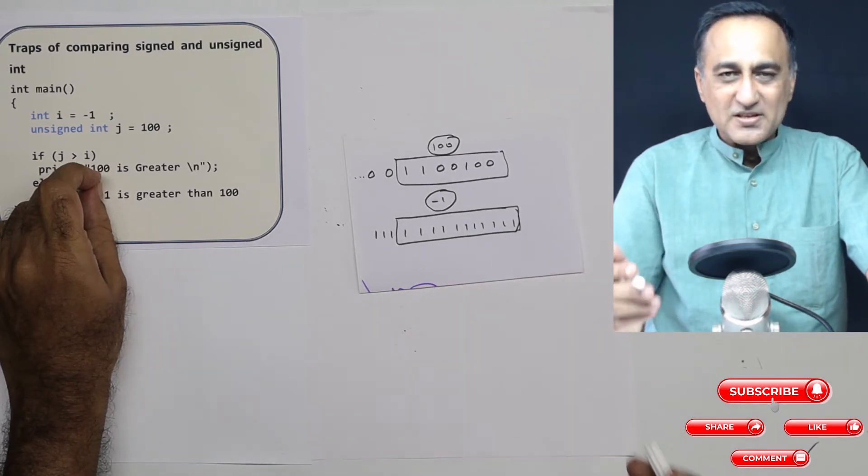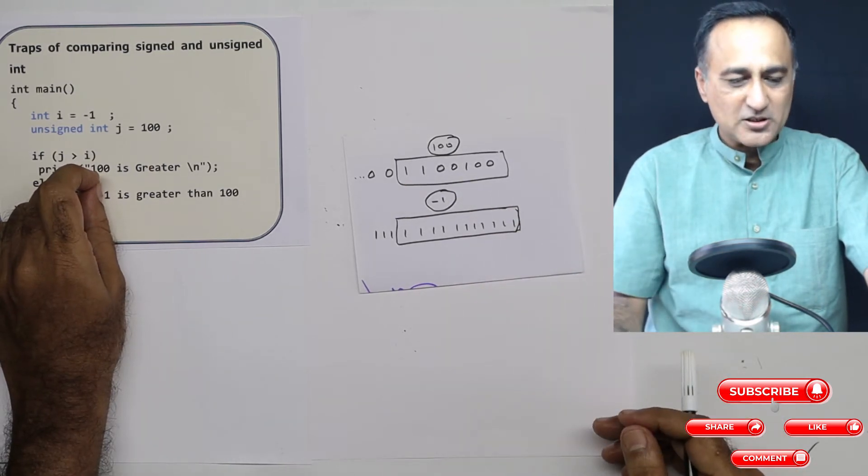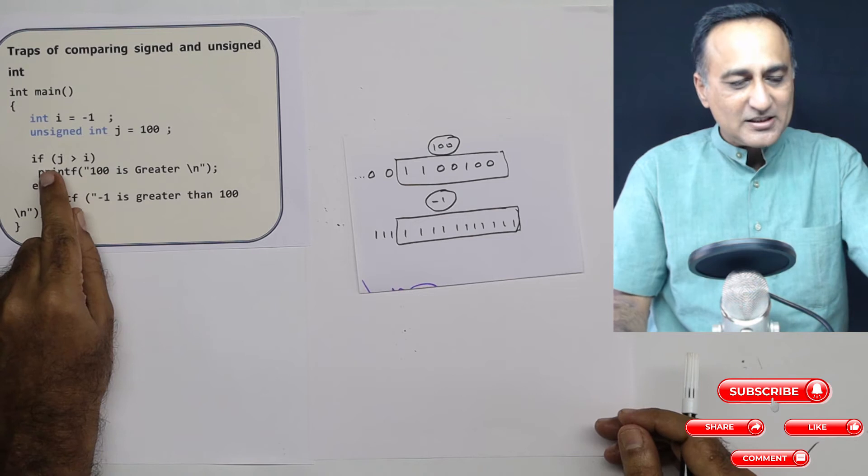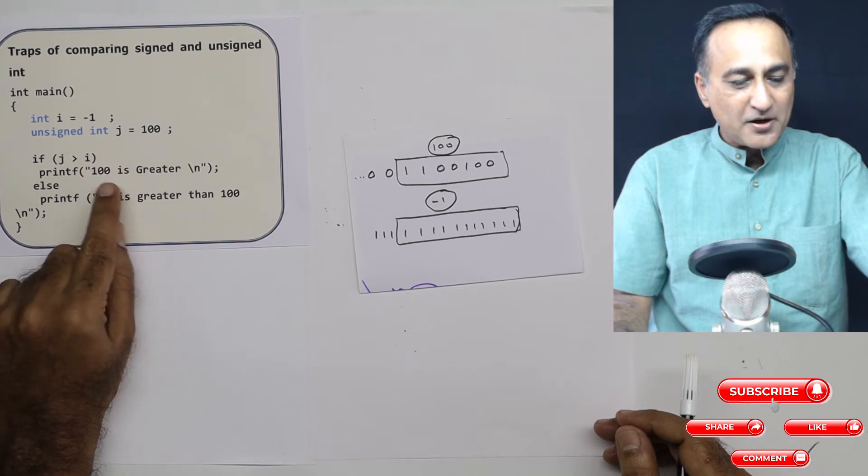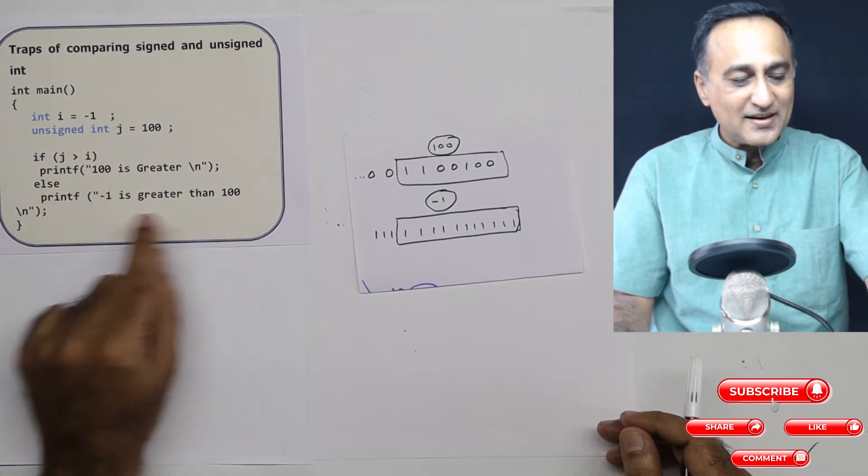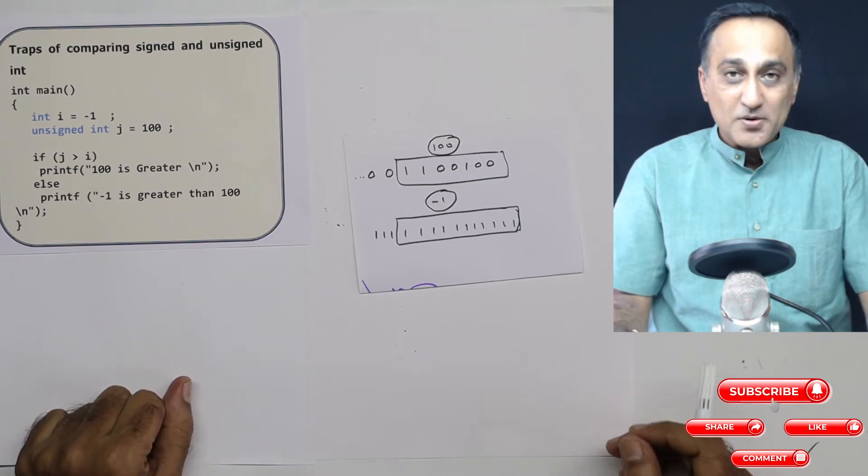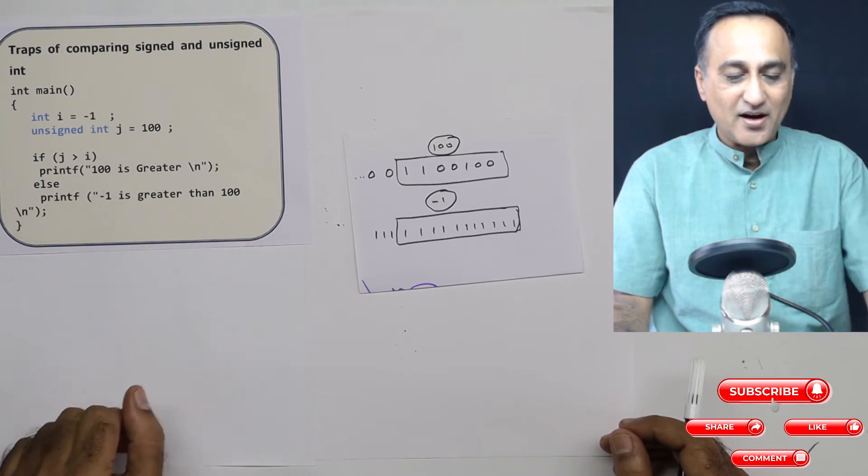Now common sense tells you -1 is less than 100. That's all we know in math. But if you write this particular code in C, you say if j greater than i, printf 100 is greater, else print -1 is greater than 100. You will be surprised it is going to print this else part, it is going to say -1 is greater than 100.